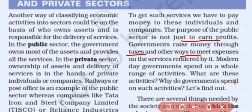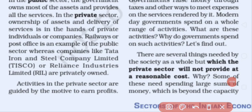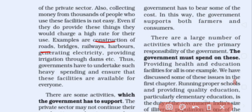There are many services in society which the private sector cannot provide at a reasonable cost, because the cost involved is very high and a lot of money needs to be spent — that is beyond the capacity of the private sector. So all that expenditure is borne by the government, i.e., the public sector. For example: construction of roads, bridges, railways, harbors, generating electricity, and providing irrigation facilities through dams.